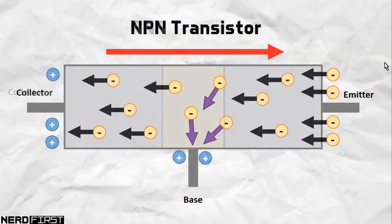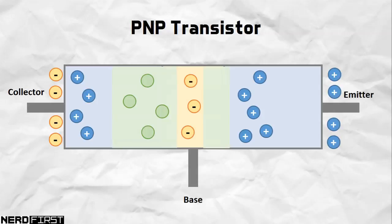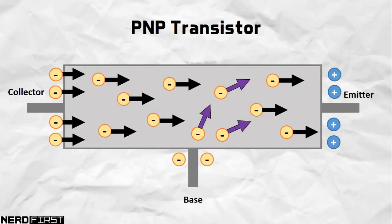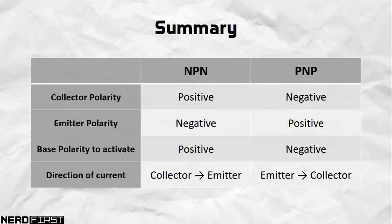That is an n-p-n transistor. For a p-n-p transistor, everything is basically just the opposite. We connect the collector to the negative side and the emitter to the positive. The base is also flipped — it now has to be negative in order to allow current to flow. Instead of having electrons drop off into the base, the base is actually adding additional electrons into the mix, causing a flow of current from the emitter to the collector. So again, the actual flow of current is opposite to the direction in which the electrons are actually moving. Conceptually, a p-n-p and an n-p-n transistor work the same way — it's just that the connections and direction of current are inverted.